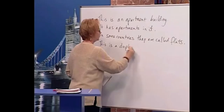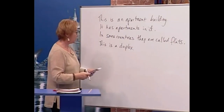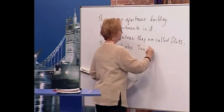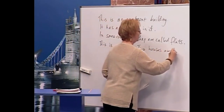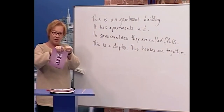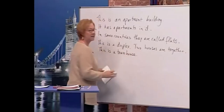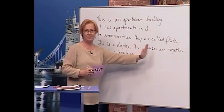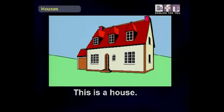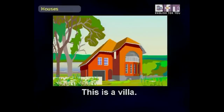Now here's another one. This is a duplex. 'Duple' means two, so two houses are together. Now here comes some more. This is a townhouse — many houses are together.